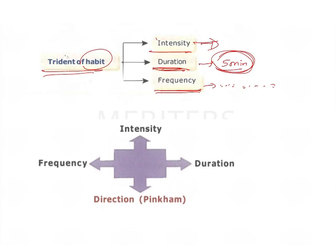Pinkham later modified this into a tetrad by adding the concept of direction. In thumb sucking, the placement or direction of the thumb is also an important factor. For example, whether or not the finger is in contact with the lower incisors determines whether the lower incisors undergo retroclination. Positioning of the finger on the palate determines the amount of upper incisor proclination. So the tetrad includes intensity, frequency, duration, as well as direction.